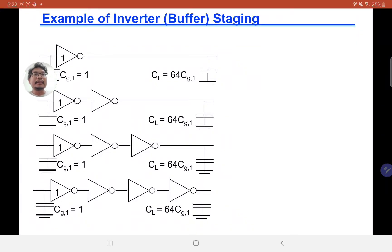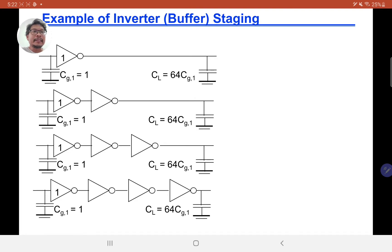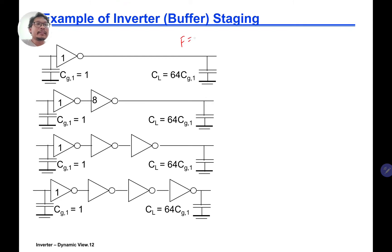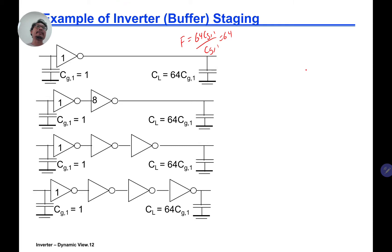Let's continue with the next part: an example of inverter buffer staging. For all four examples, they all have the same big F. Our big F is 64, where F equals CG1 divided by CG1 equals 64. In all cases, the effective delay factor on the line is 64. The question is: what is our delay if you put one, two, three, or four inverters?